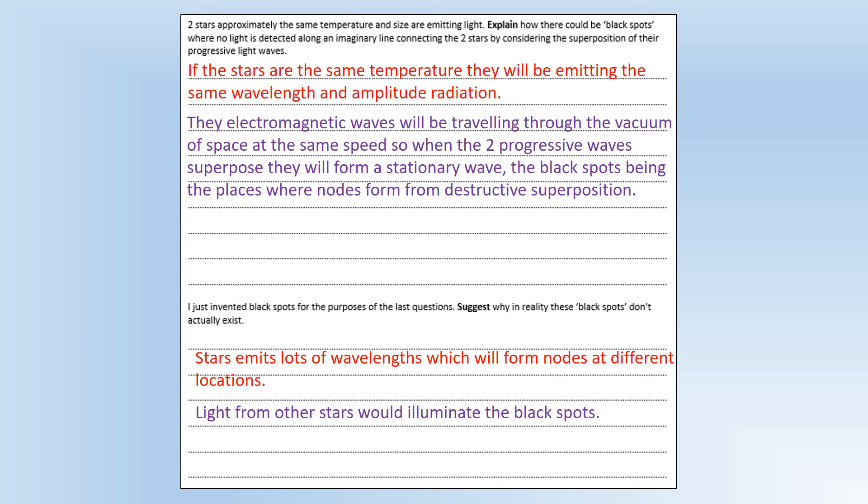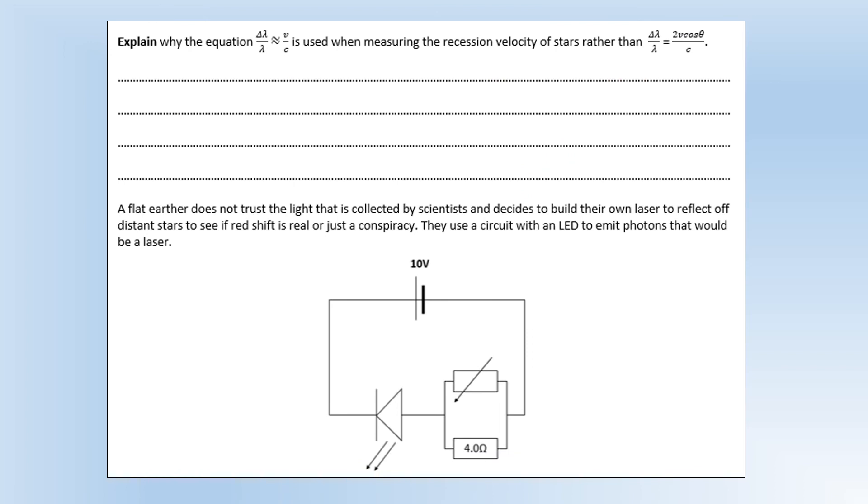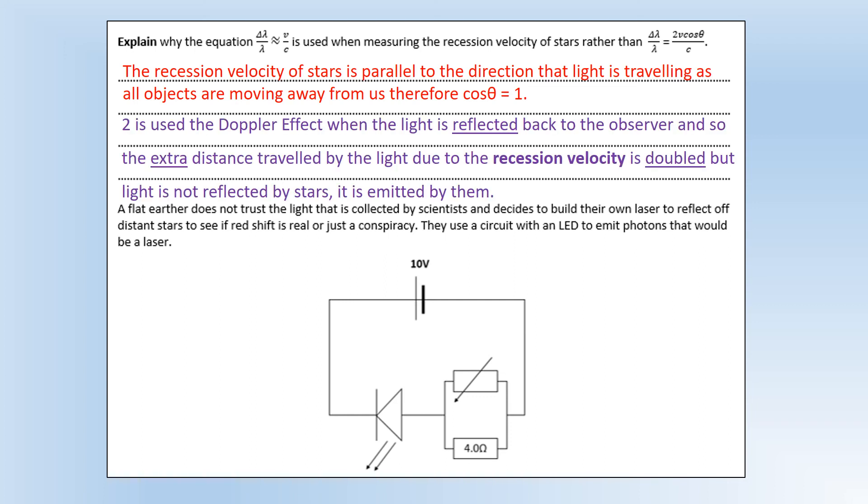Okay, so explain why this Doppler effect equation is used when measuring the recession velocity of stars rather than this other version of the Doppler effect you encounter as part of the course. So the first reason is the recession velocity of stars is parallel to the direction that light is traveling to us from the star, because all objects are moving away from us. And that makes cosine theta equal to one, so that could be in the equation but that's why it's not, because it's equal to one. And the second reason is the two in the second version of the Doppler effect is used when the light is reflected back to the observer, and so the extra distance traveled due to the recession velocity is double. But the light from stars is not reflected, it's emitted by them, so we don't have the two when we're doing cosmology.